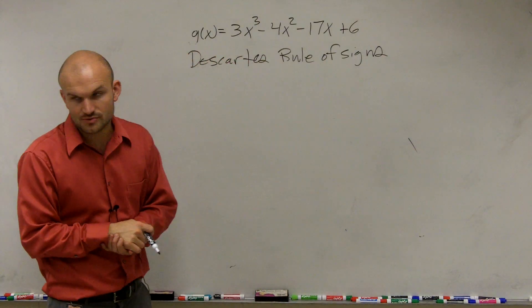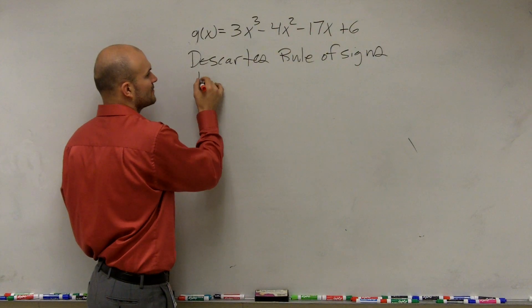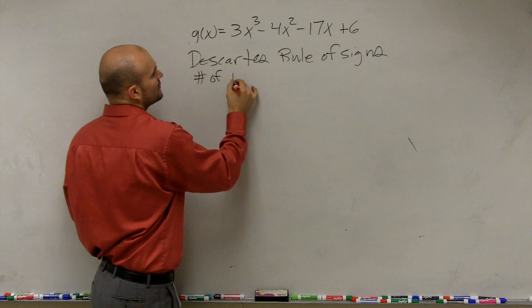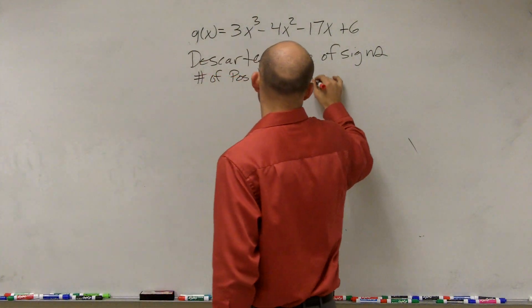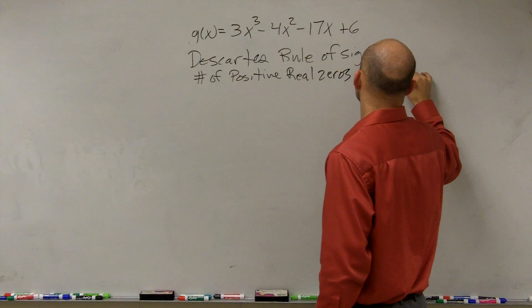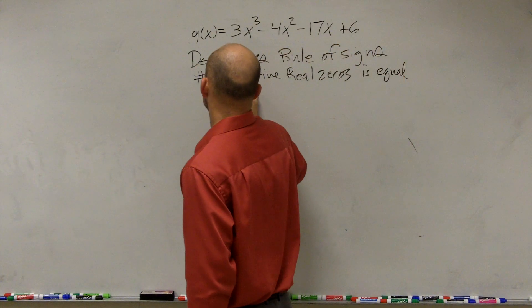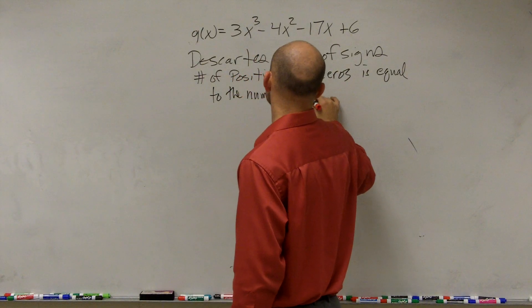So how does Descartes' rule of signs work? Descartes' rule of signs is going to say, let's first work on the positive. So we're going to have the number of positive real zeros is equal to the number of sign changes